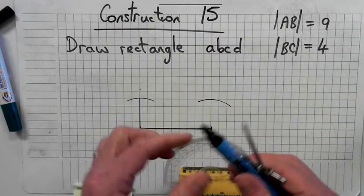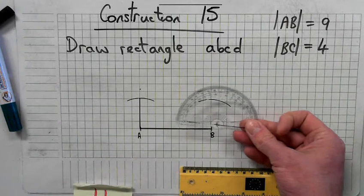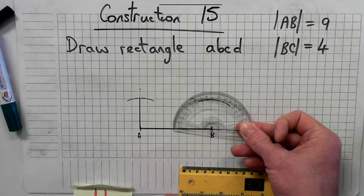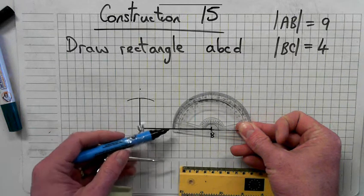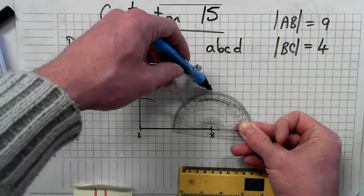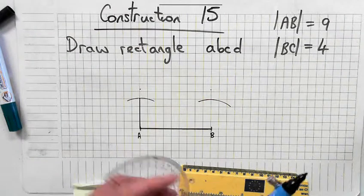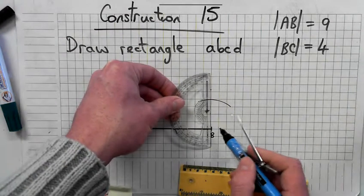Do the same with B. Hold it with your right hand on the crosshairs, put the crosshairs on B, line it up with AB. Start at zero, walk your way around until you get to 90, join up A and that point there.